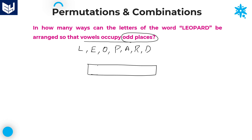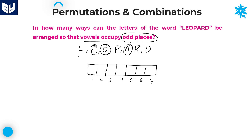Total letters: 7. The positions are one through seven, giving seven total positions. The condition is vowels occupy odd places. How many vowels are there? There are three vowels: E, O, A. And how many odd positions are there? Odd positions are one, two, three, four — total four odd positions. We need to arrange these three vowels in these four odd positions.